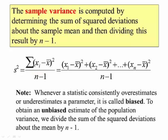Why do you divide by n minus 1? Well, whenever a statistic consistently overestimates or underestimates a parameter it's called bias. To obtain an unbiased estimate of the population variance we divide the sum of the square deviations about the mean by n minus 1. So in other words, we lose what's called a degree of freedom.